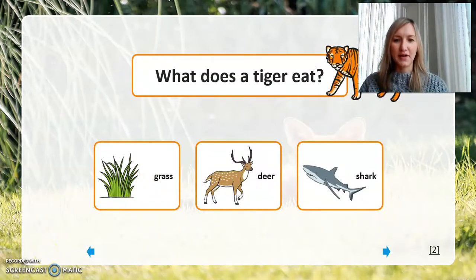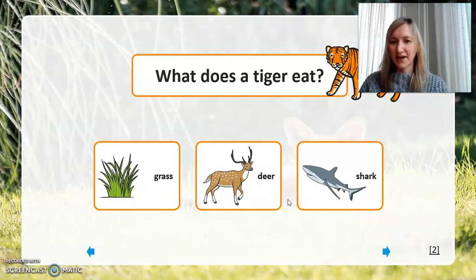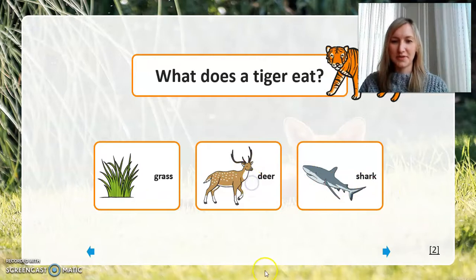Now let's consider what a tiger eats. Do you think that's also going to be grass? Put your answers into our class chat. And you're correct. It's not grass this time. It's got to be one of the other things. Let's think about the environment where a tiger lives. Is it on land or at sea? Yes, it's on land. So it's going to be the deer.